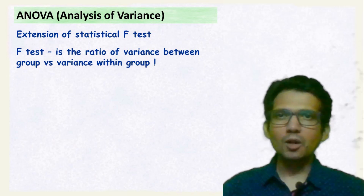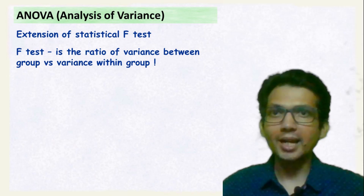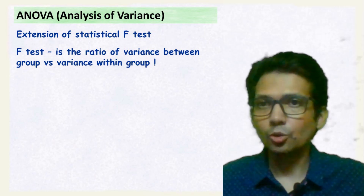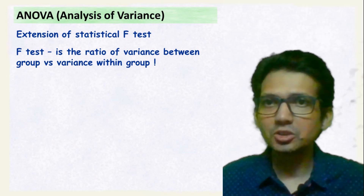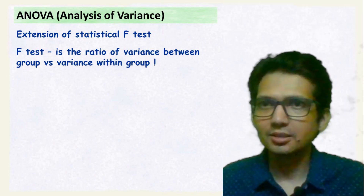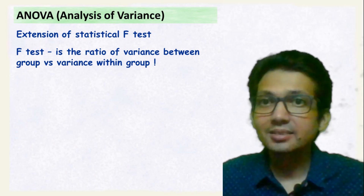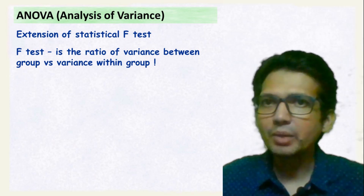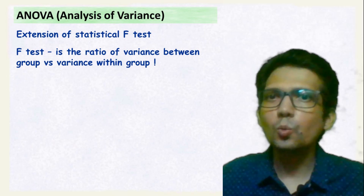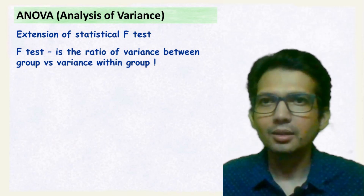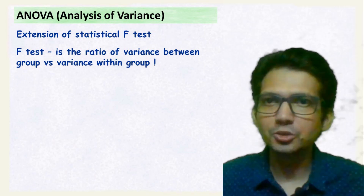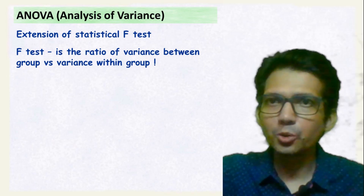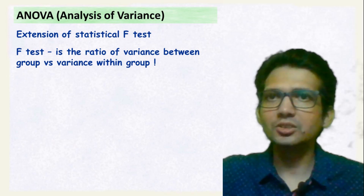Hi, let's talk about a very interesting topic known as ANOVA, the analysis of variance. ANOVA is the extension of the statistical F-test. The F-test is defined as the ratio of variance between group versus variance within group. Many students get confused understanding the difference between variance between group and variance within group.